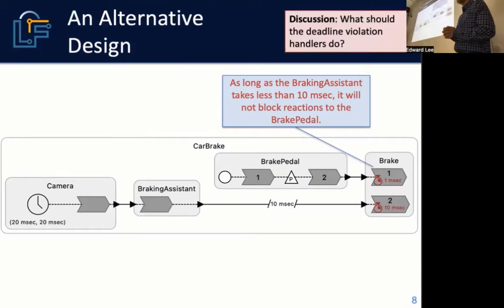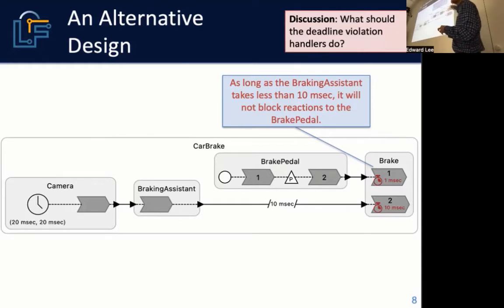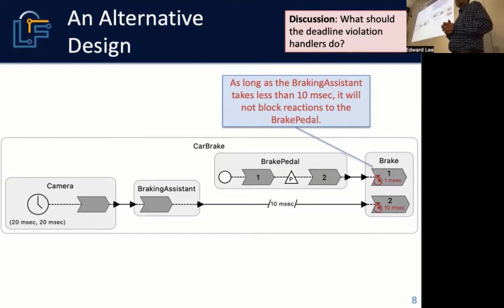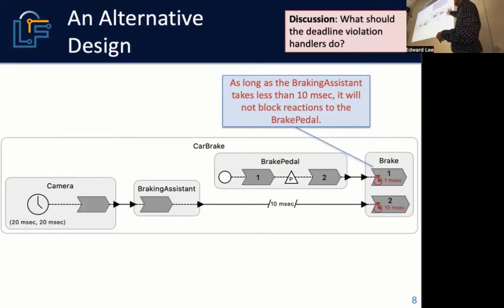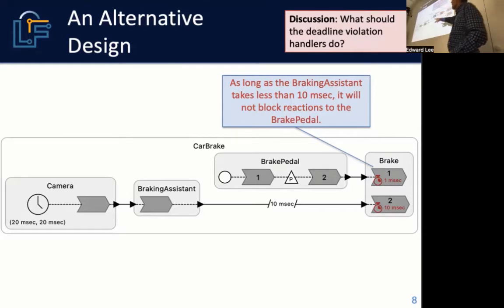What should the deadline violation handler do? You'd probably want to design your system to make these deadline violations very uncommon, which means you really want to be sure the braking assistant executes within 10 milliseconds — which means doing it in the cloud is probably not good enough.